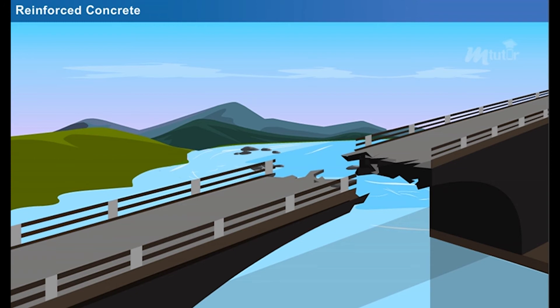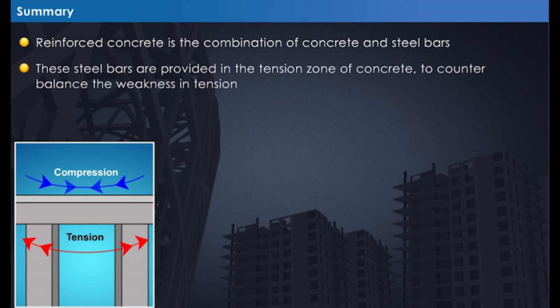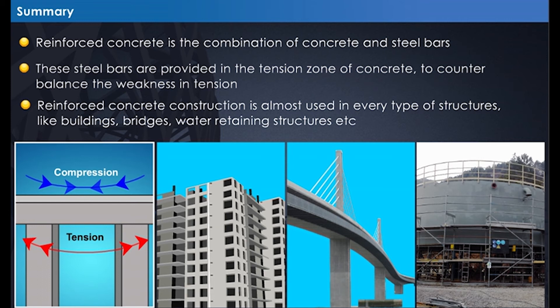Summary: Reinforced concrete is the combination of concrete and steel bars. These steel bars are provided in the tension zone of concrete to counterbalance the weakness in tension. Reinforced concrete construction is used in almost every type of structure, like buildings, bridges, water retaining structures, and more.